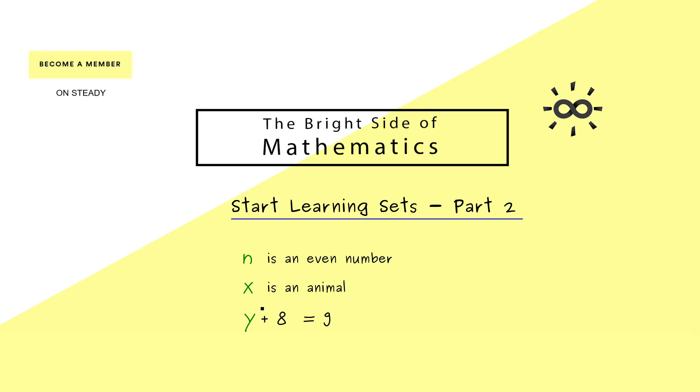Now what you should note is that the letters n, x, and y are not fixed numbers or fixed objects but just placeholders. Therefore, it would be better to write each sentence with a gap which could be filled.